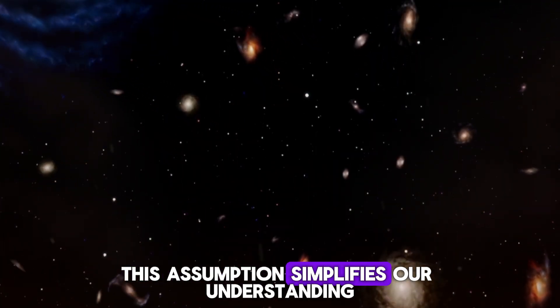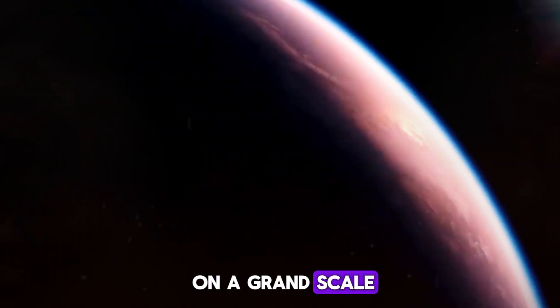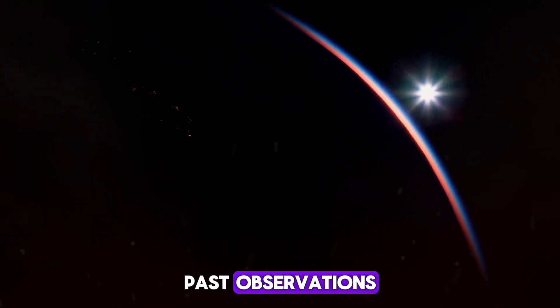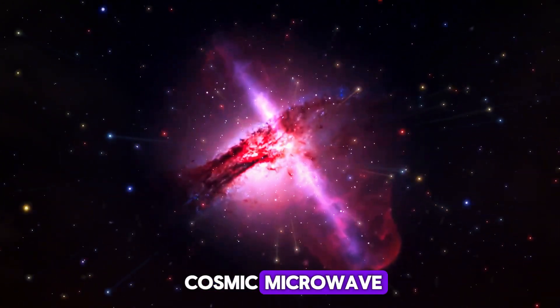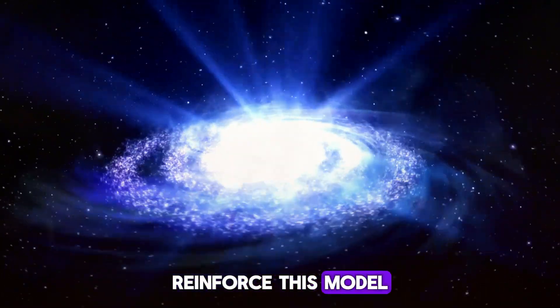This assumption simplifies our understanding, suggesting that the universe, on a grand scale, is both homogeneous and isotropic. Past observations, like the uniformity of cosmic microwave background radiation and the even distribution of galaxy clusters, reinforced this model.